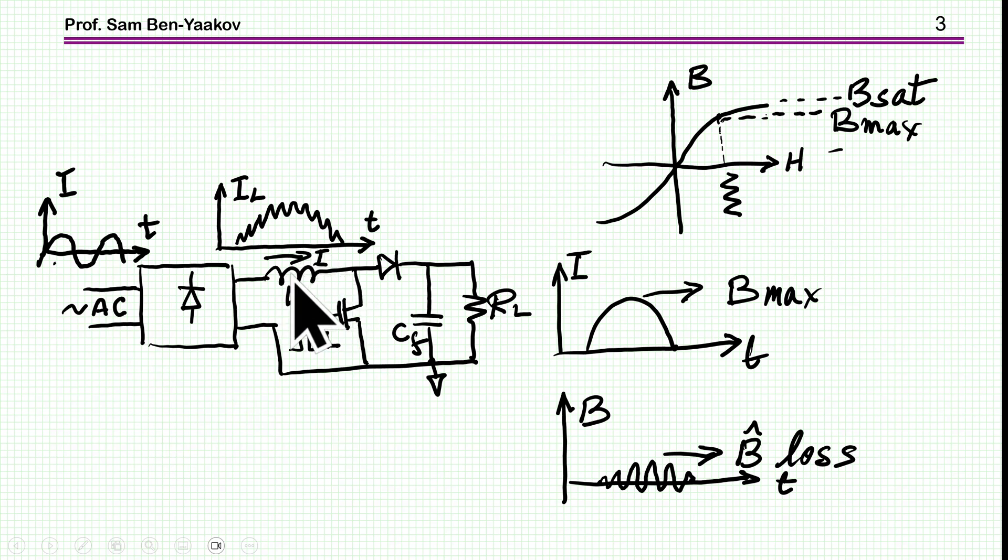Now the inductor has to fulfill two requirements. Number one is not to go into saturation by this high current, the peak current here. Inductors are built around ferromagnetic material - ferrite, amorphous, or any other - which has a saturation level for the magnetic flux density. We have to make sure we are not approaching this saturation level, go up to some B max such that the inductor will retain its inductance. Otherwise it's going to be much lower inductance with high ripple and there might be damage to the system.